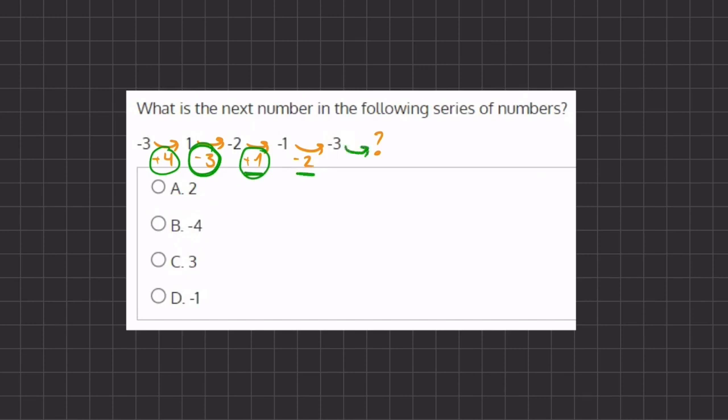So if we take 1 and negative 2 and add them together, we get negative 1. That's going to be our next transition. So if we do negative 3 minus 1, we get negative 4, which will be the next number in our series.